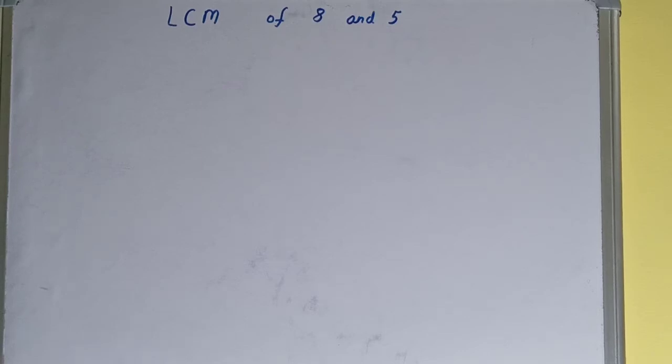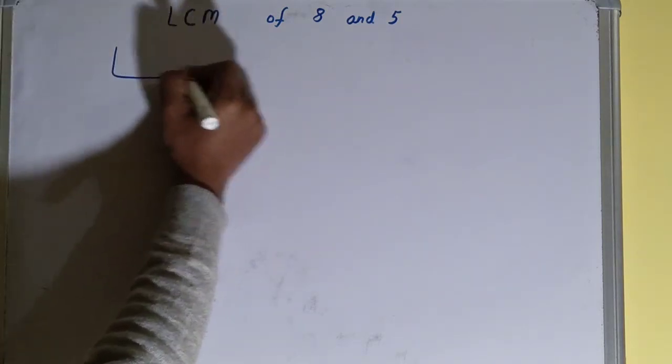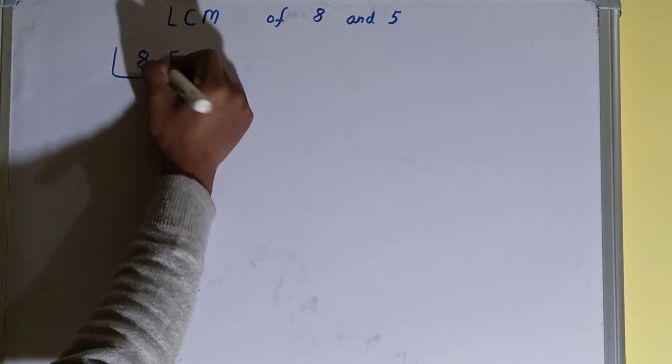Hello friends, and in this video I'll be helping you with the LCM of the numbers 8 and 5. So let's start. To find it out, you need to write both the numbers like this: 8 comma 5.